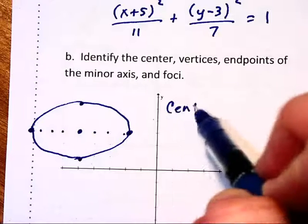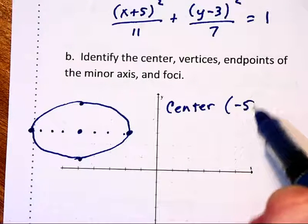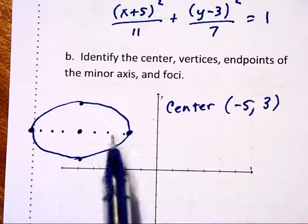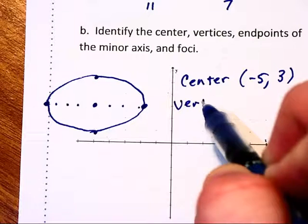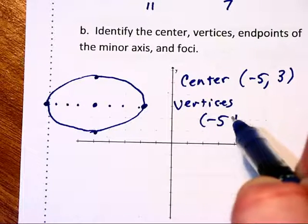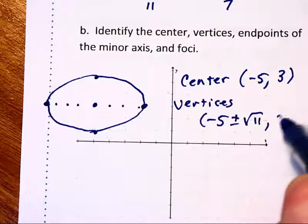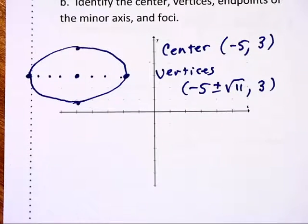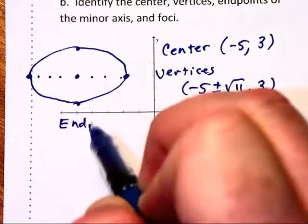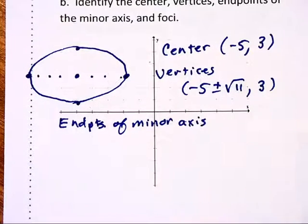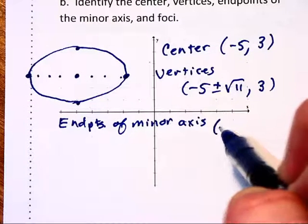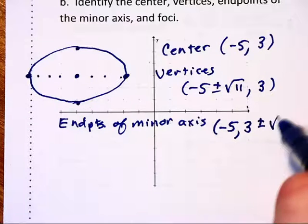So we said the center is at (-5, 3). We moved root 11 left and right. So the vertices will be at (-5 ± √11, 3). The next thing we want to look at is the endpoints of the minor axis. And the 7 was in the denominator of our equation. So we're going to go root 7 up and down. Those will be located at (-5, 3 ± √7).